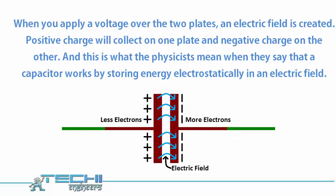When you apply a voltage over the two plates, an electric field is created. Positive charge will collect on one plate and negative charge on the other. This is what physicists mean when they say that a capacitor works by storing energy electrostatically in an electric field.